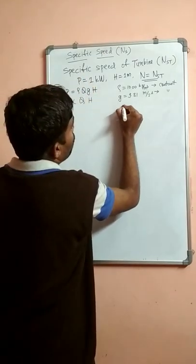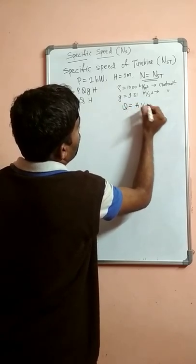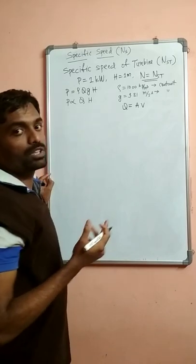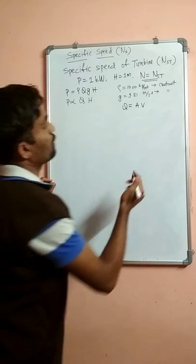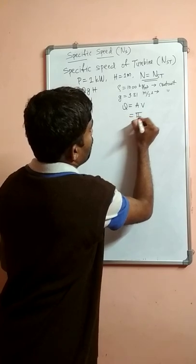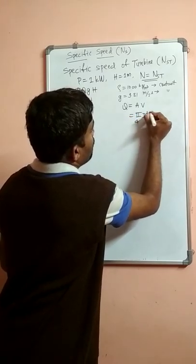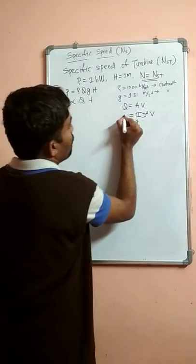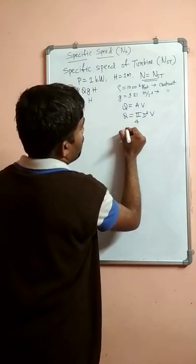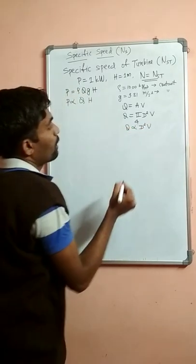Now considering Q, which equals A into V from the continuity equation for incompressible fluids like water. For the cross-sectional area, A equals pi by 4 times D square into V. Eliminating the constants, we get Q is proportional to D square into V.